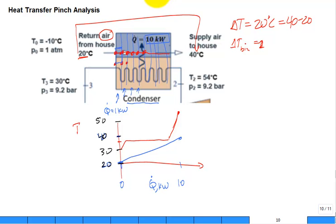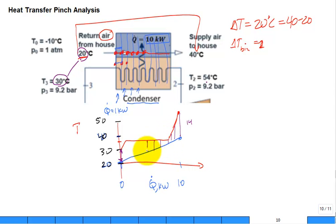What we do is check the delta T at each point. We can see it's not a uniform value everywhere — maybe it goes up and then goes back down, and the minimum delta T is somewhere in the middle. If the minimum is above a few degrees, that's great. But if the minimum gets to zero or below zero, then we have a problem. If it becomes negative, that heat exchanger just will not work.